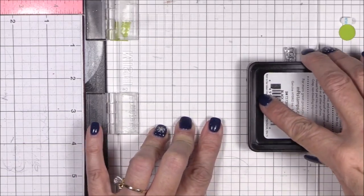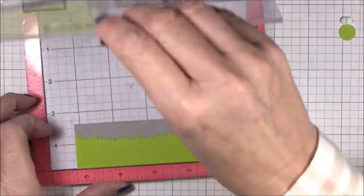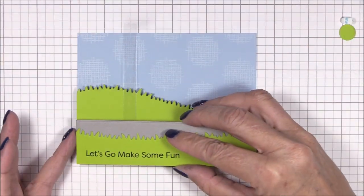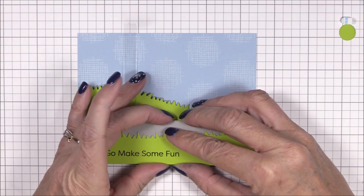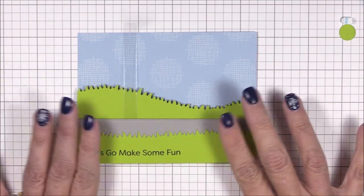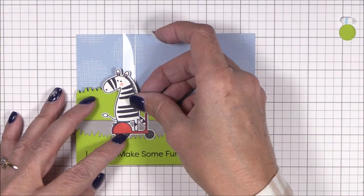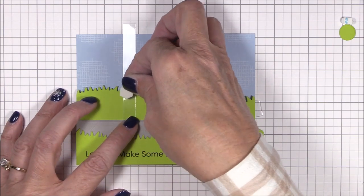Before I assemble anything else, I need to do a bit of stamping. I've placed the grass and sidewalk panel into my MISTI and I'm inking out my sentiment with some black licorice hybrid ink. And now I can adhere that panel to the image panel with a single layer of foam squares, again making sure that none of the adhesive interferes with the movement of the mechanism.